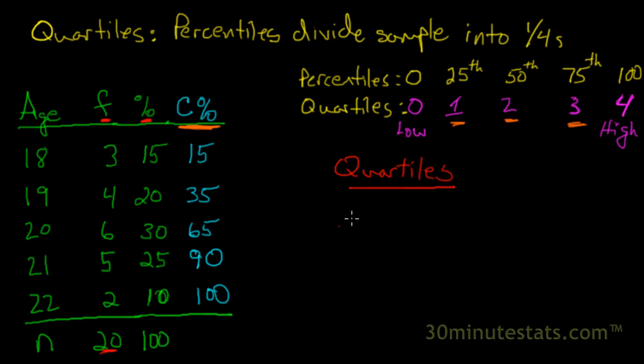Now we can calculate the quartile values using this table. Let's start by looking for the first quartile, or Q1, which is the 25th percentile. What we want to do is find the 25th percentile. We'll look at the cumulative frequency distribution, and we'll see that 15% of our sample is age 18, and 35% of our sample is age 19 or less.